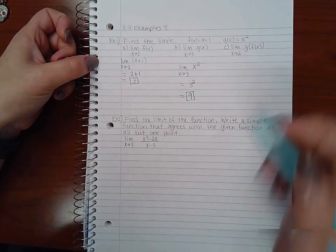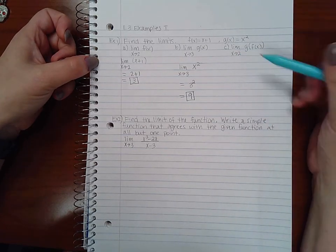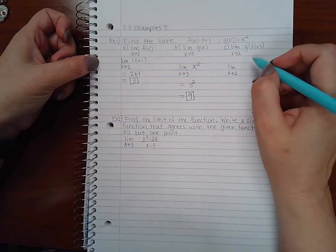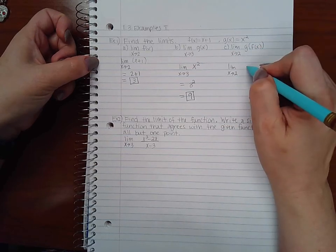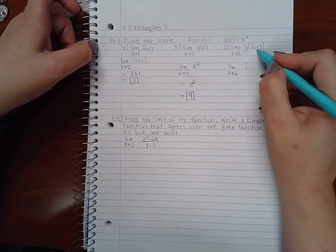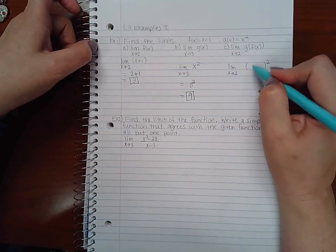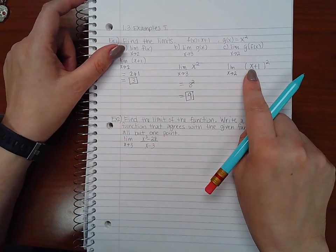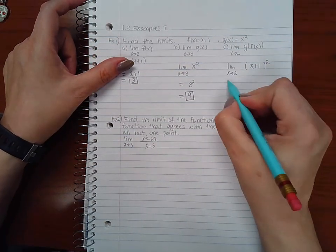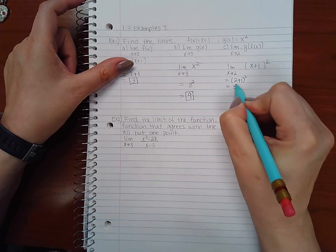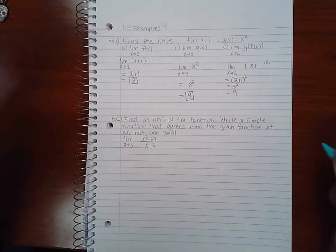Now here I'm going to try limit as x goes to two of g of f of x. So that is going to be g which is something squared and f of x in place of the x, so x plus one. Remember your composition functions. Now I'm writing the composition function here and when I go ahead and use direct substitution I get two plus one squared which is three squared which equals nine.